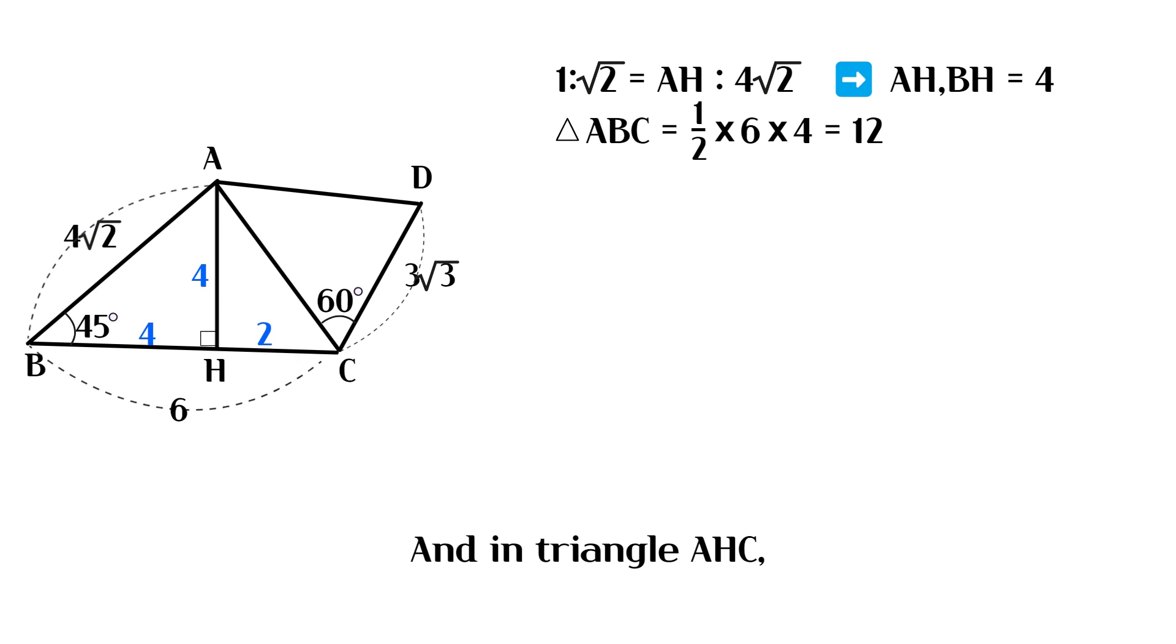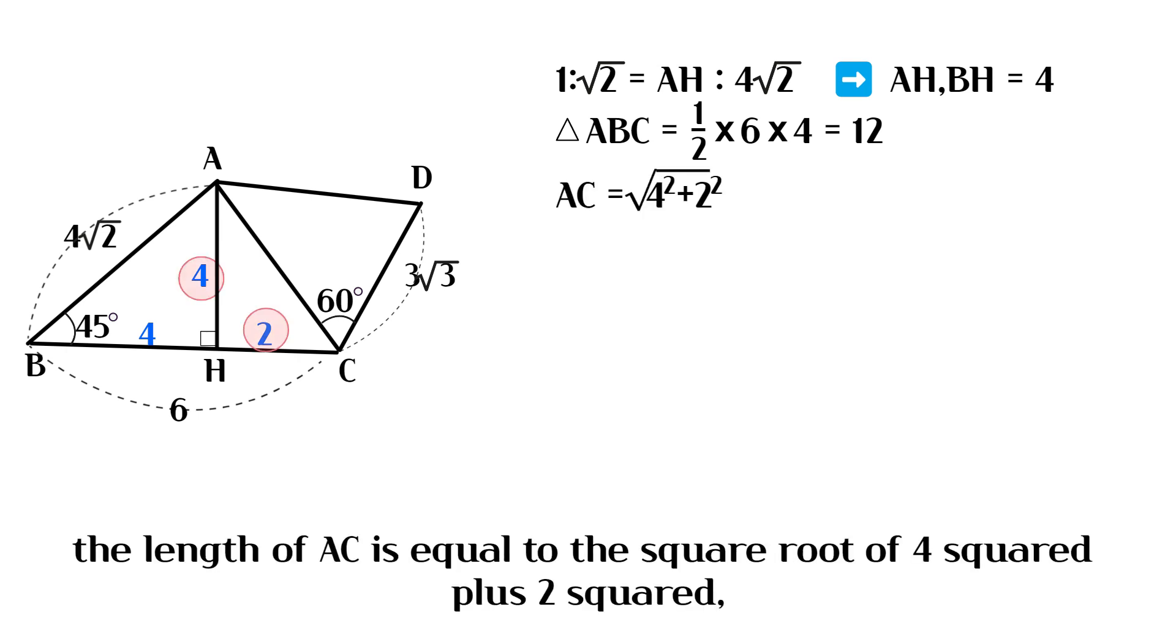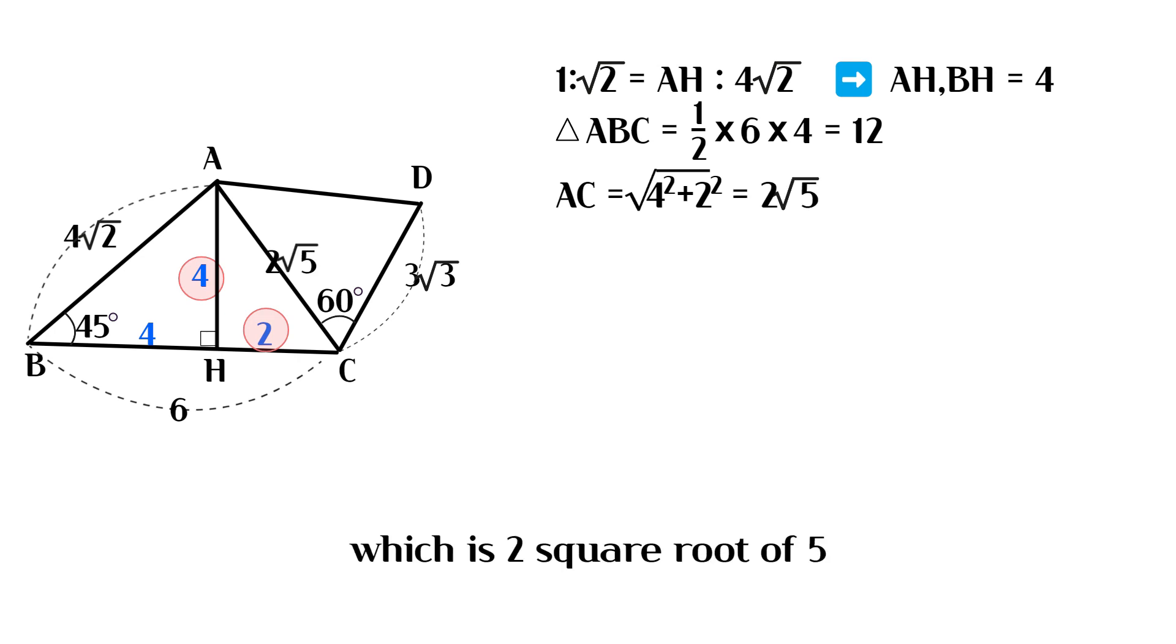And in triangle AHC, the length of AC is equal to the square root of 4 squared plus 2 squared, which is 2 square root of 5.